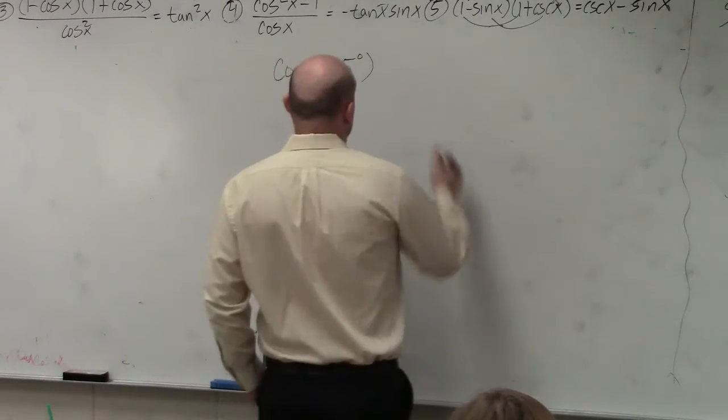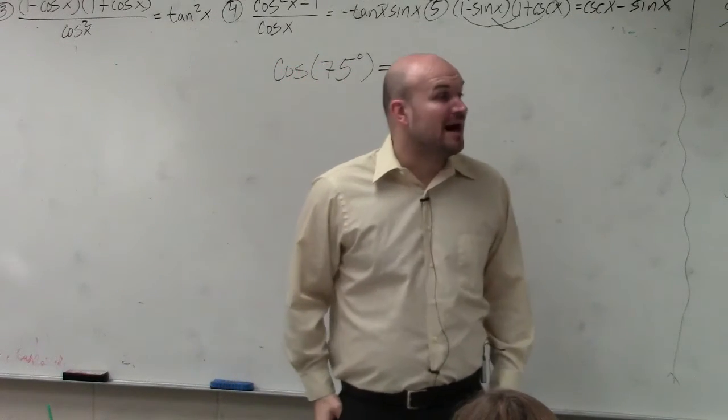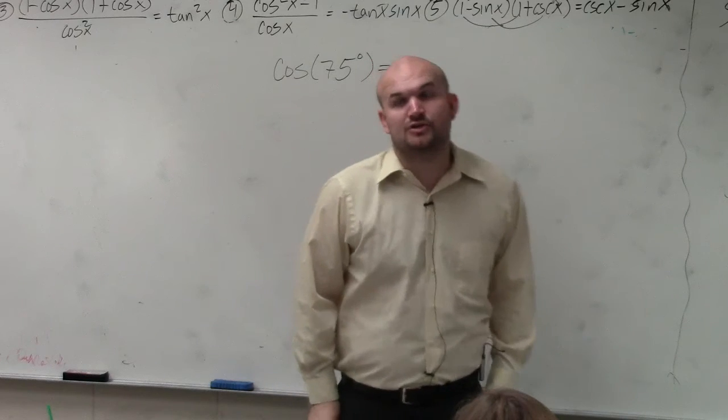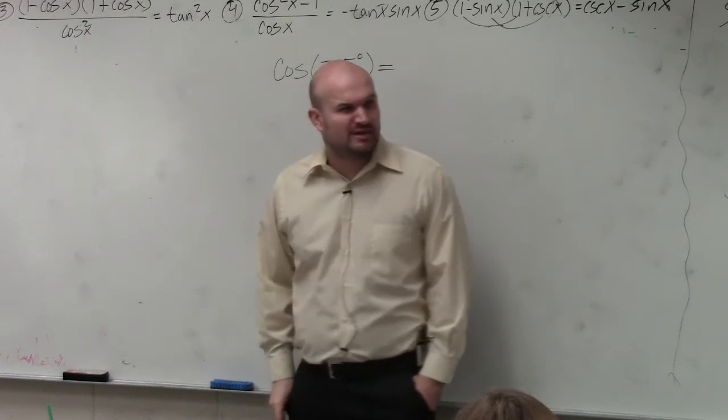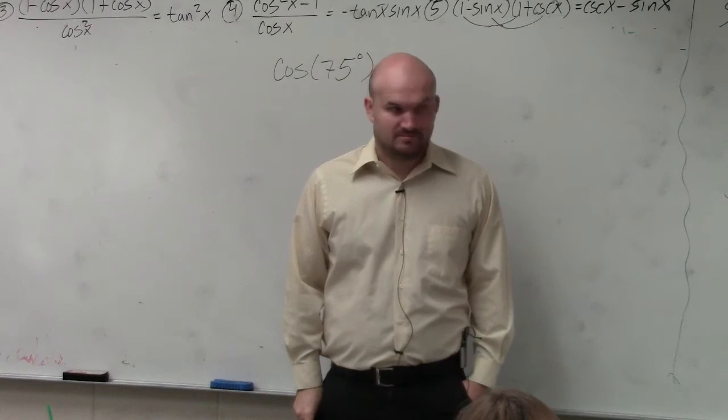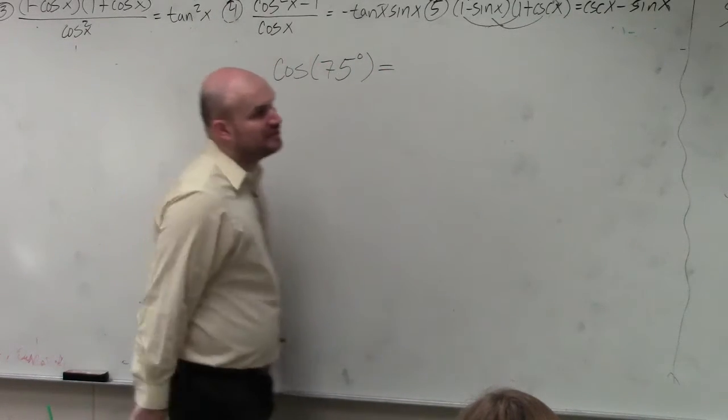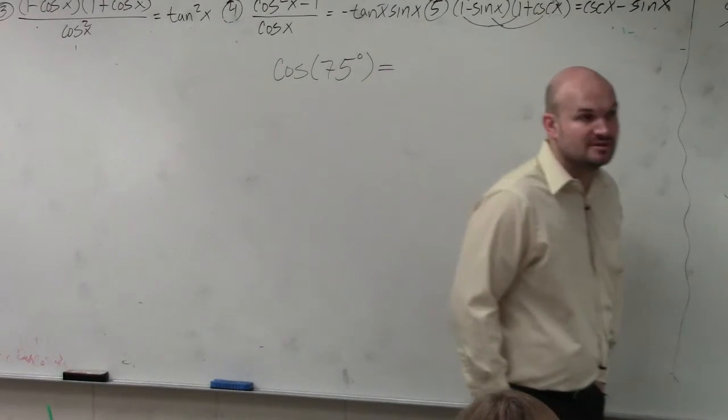That's pretty. If I was going to ask you guys to evaluate this, obviously 75 degrees does not correlate to a coordinate point that we've used on the unit circle so far, correct? Does not work, right? So using the unit circle to evaluate cosine 75 degrees is not going to help us out much.